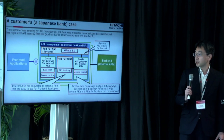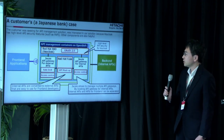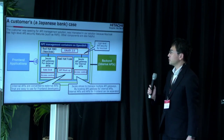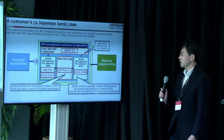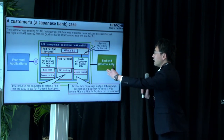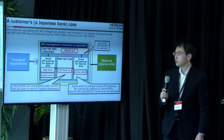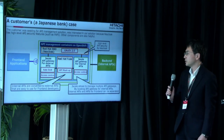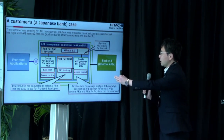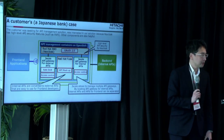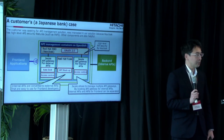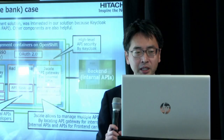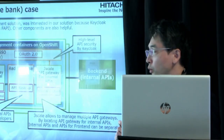This is the component setup. There is Keycloak — we are using Red Hat SSO. And there are two API gateways: an API gateway for external APIs and an API gateway for internal APIs. There is also Red Hat Fuse, which converts internal APIs to external APIs. External APIs are easy to use for front-end developers.